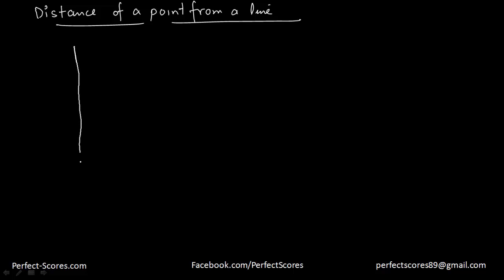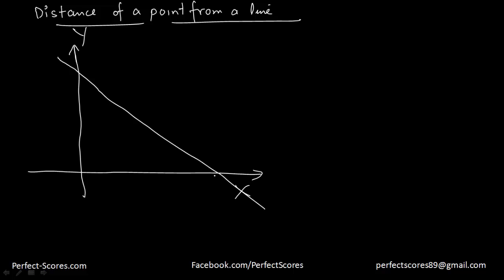So let's suppose we have our x-axis and y-axis here. I am going to keep the diagram pretty big. This is a line which has a point Q and a point R, and we have a point P here. The coordinates of point P are x1, y1, and the equation of this line is ax plus by plus c is equal to 0.